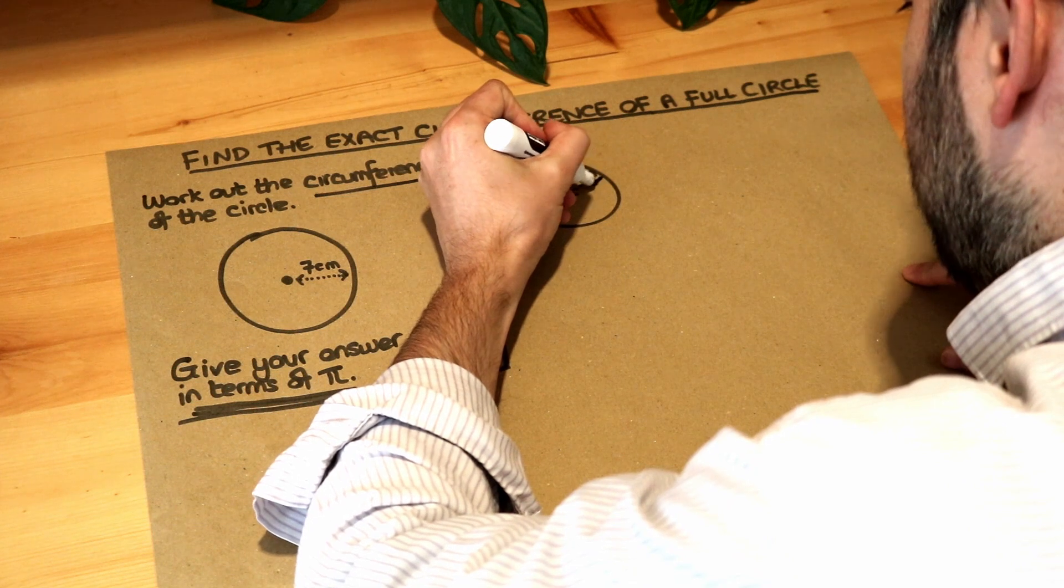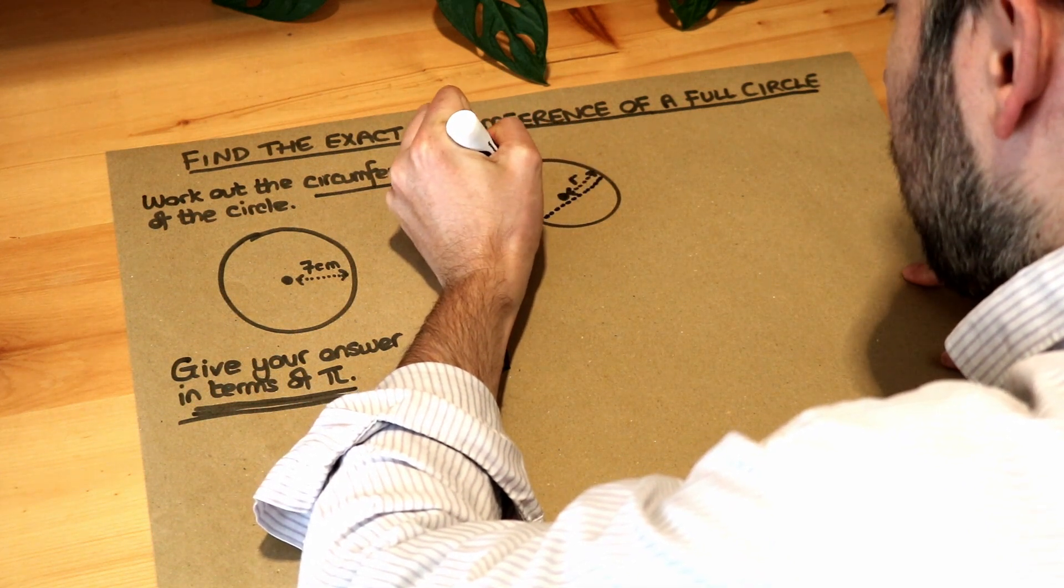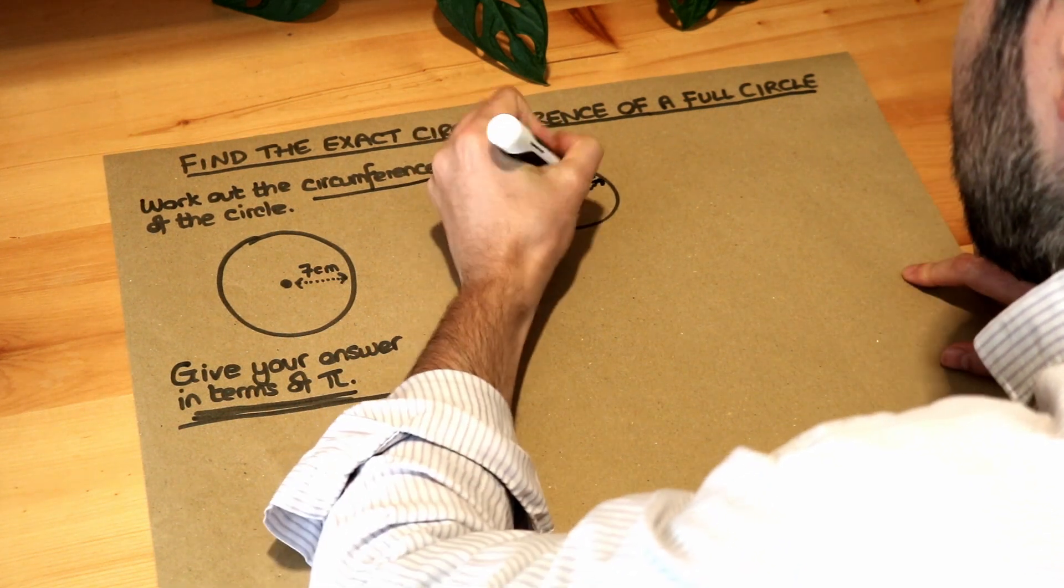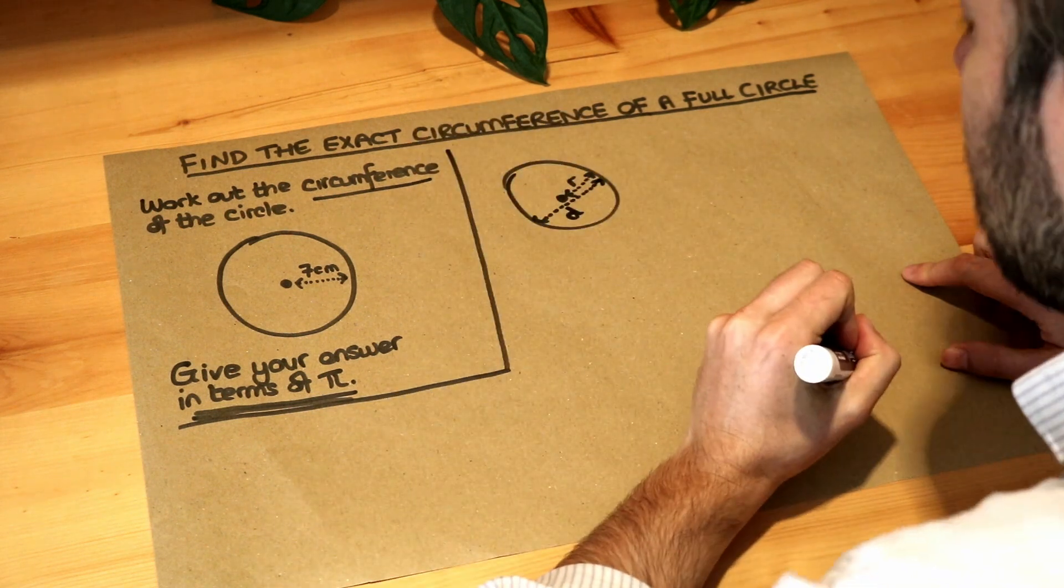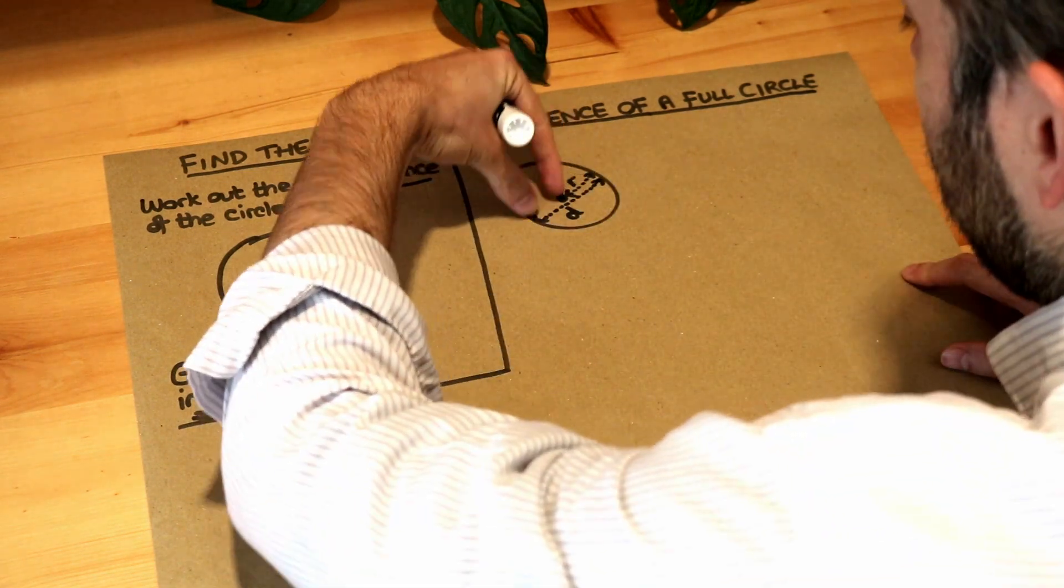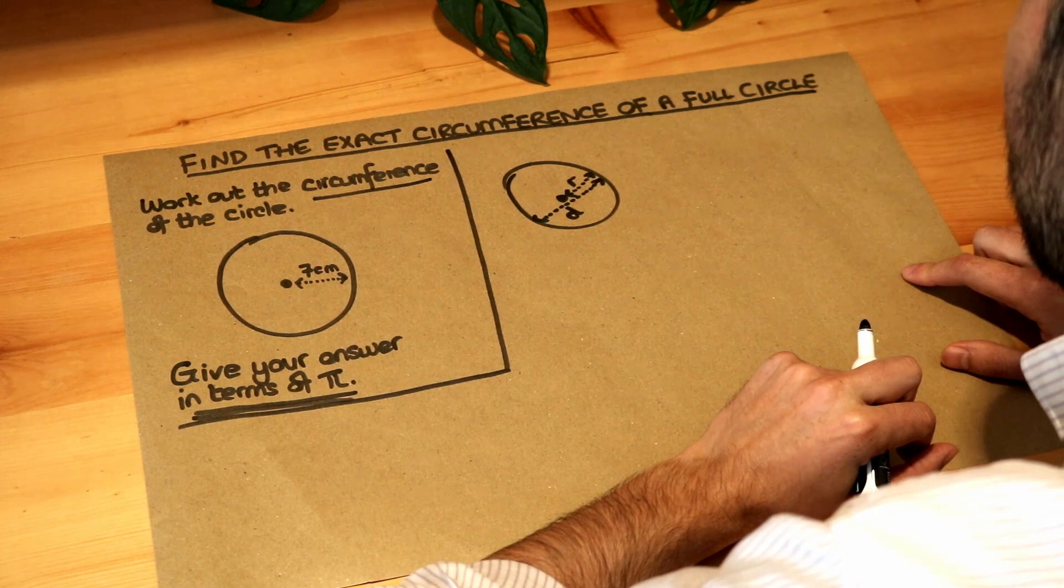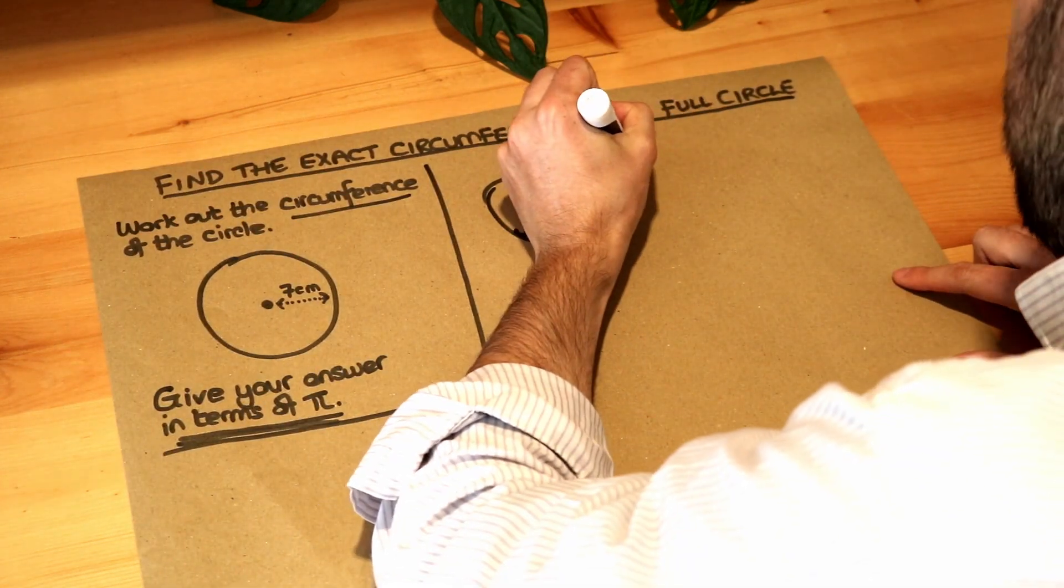And remember that the line from one end of the circle to the other through the centre is known as the diameter. I'm going to use D for diameter. And you can see that two lots of the radius would be the same as the diameter of the circle. So the circumference of the circle,